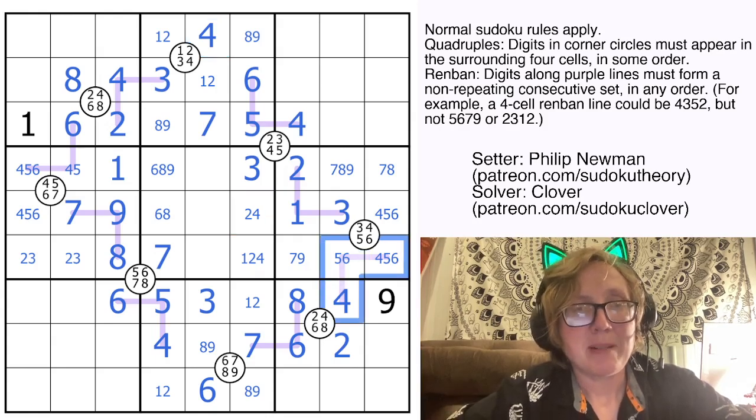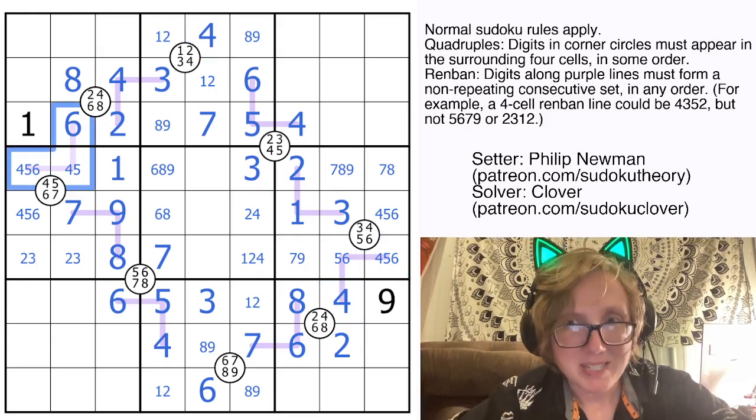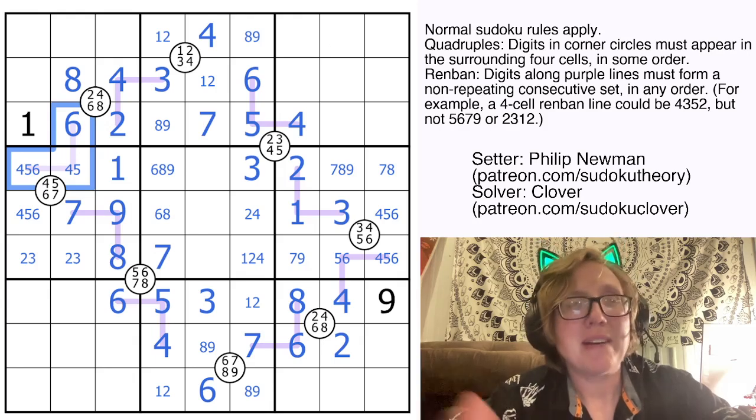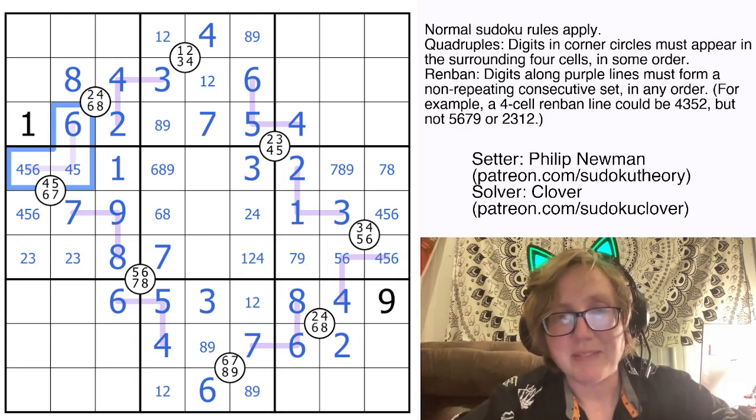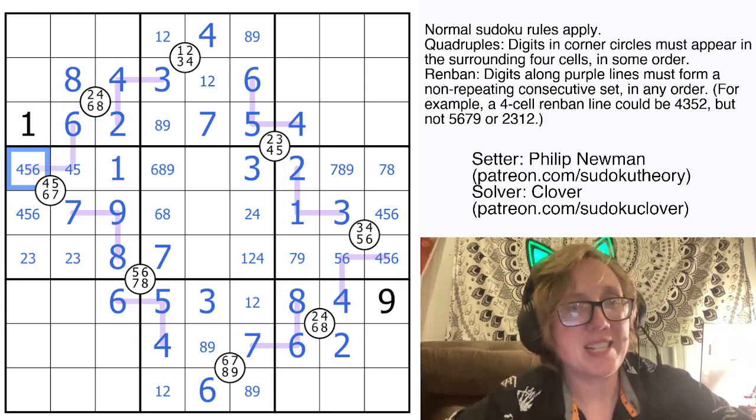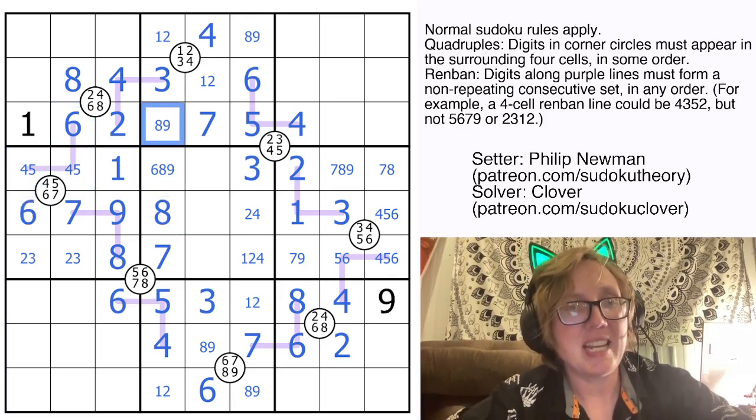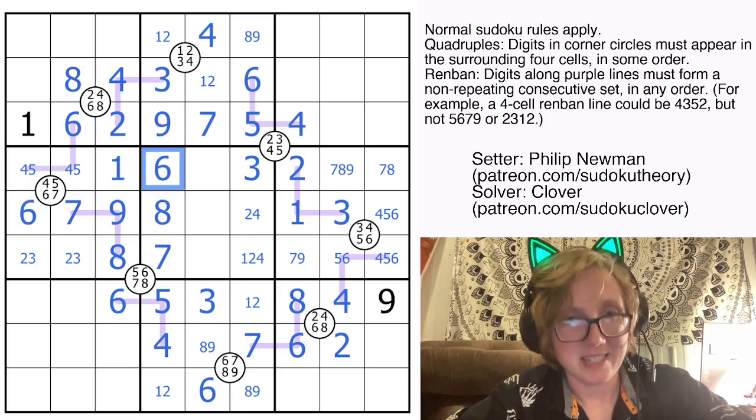Now if we look at these renbans, we can't have a repeated digit on a renban because then it wouldn't be a consecutive set. It would be like 5, 5, 6, or something like that. That's not a consecutive set of digits. There has to just be one of each for the whole set, so this can't be a 6 because we already have a 6, so this is now a 6, making this an 8, a 9, and a 6.